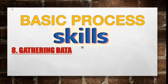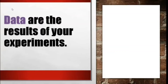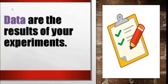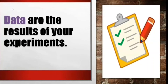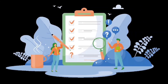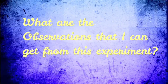Skill number eight: gathering data. Gathering data is the skill needed to record the observations you have detected during an experiment. Data are the results of our experiments, and in doing an activity or experiment, we need to record all observations we have. It is very important to have a final answer for the experiment. In gathering data, we try to answer the question: what are the observations I can get from this experiment?